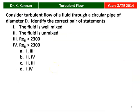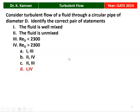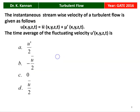The next question from the 2014 question paper: Consider turbulent flow of a fluid through a circular pipe. Identify the correct pair of statements — the fluid is well mixed or unmixed; Reynolds number is less than 2300 or greater than 2300. The correct answer is option D: the fluid is well mixed and the Reynolds number is greater than 2300.